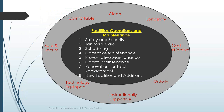There are really eight areas that help keep our facilities prepared to meet those objectives. The first is safety and security, along with janitorial care, scheduling of facilities, corrective maintenance, preventative maintenance, capital maintenance, renovations or total replacements, and new facilities and additions. While administrators and educators shouldn't be experts on facilities, an overview of these eight topics will be helpful in increasing the effectiveness of school facilities.